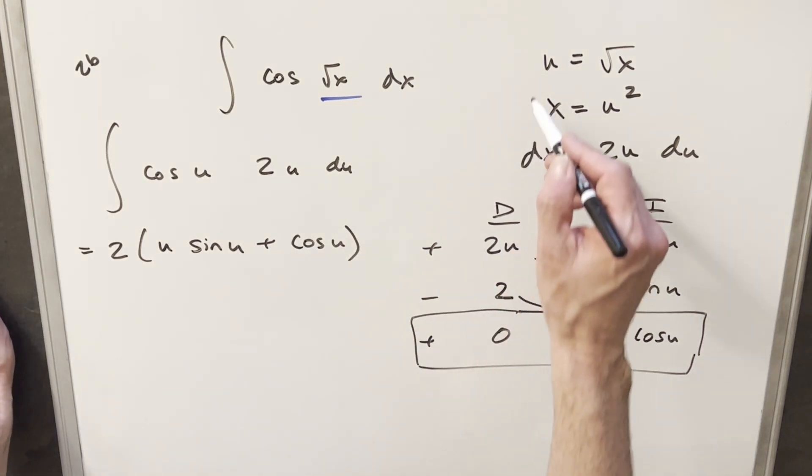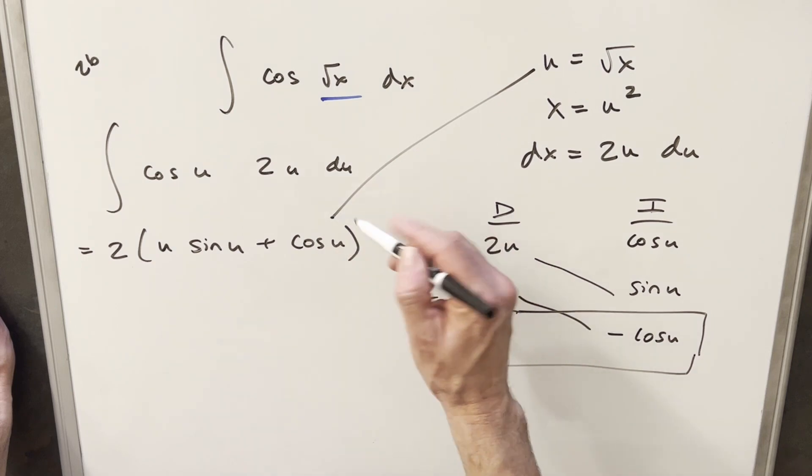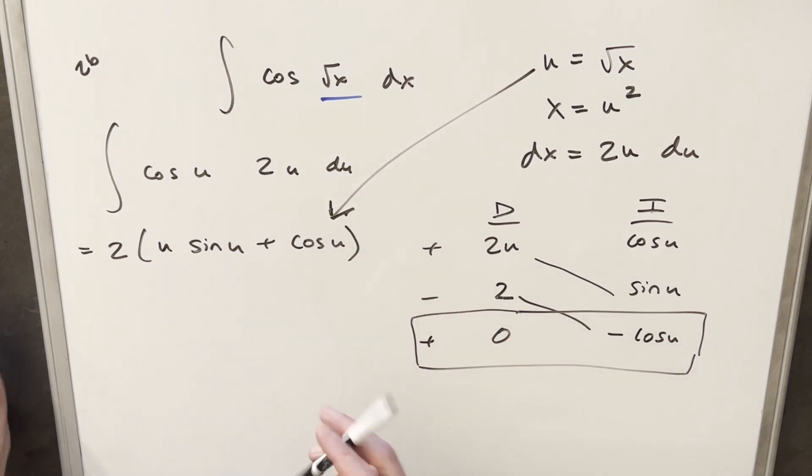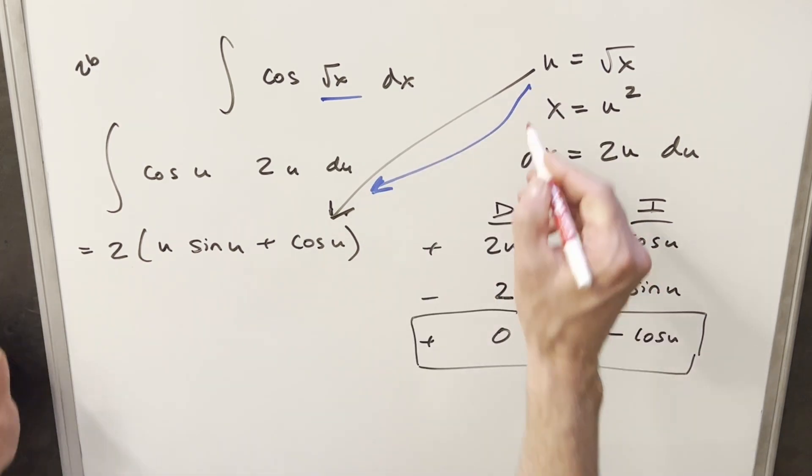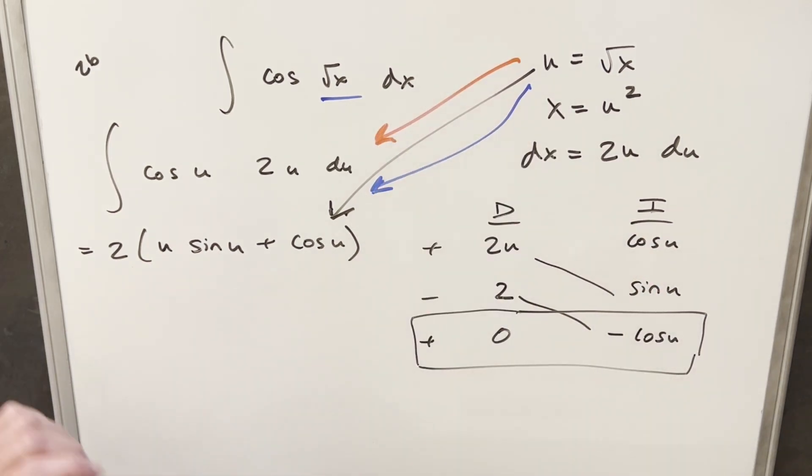So all I need to do to finish this is just back substitute. You can see my pen's getting kind of dry. So we just need to back substitute our u value, just back substitute like that.